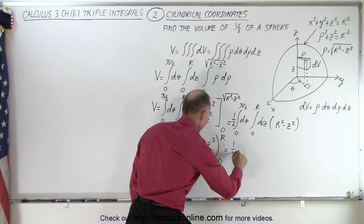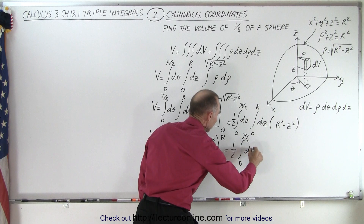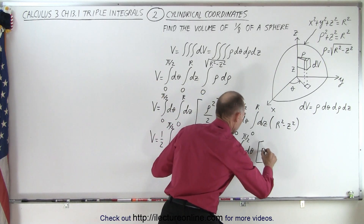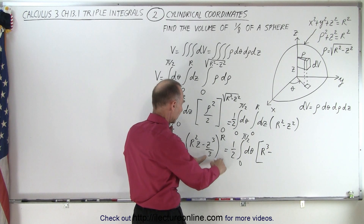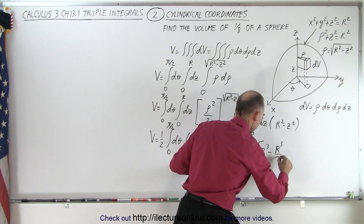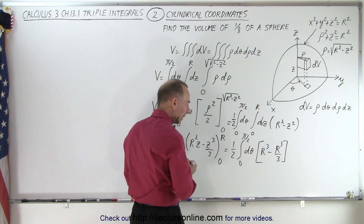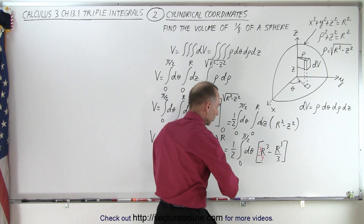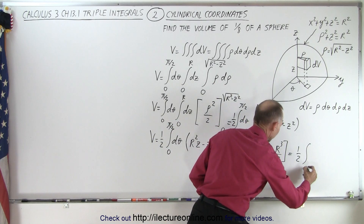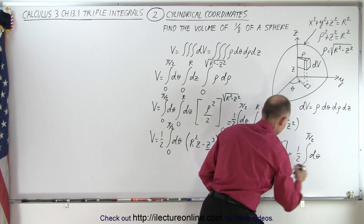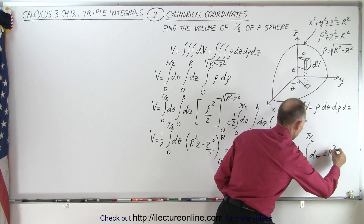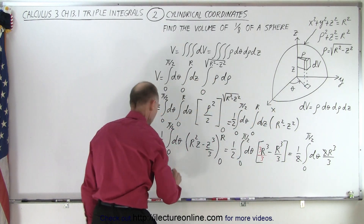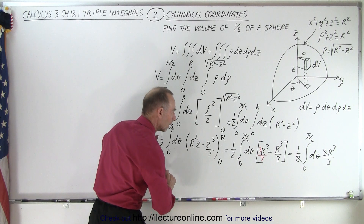So this becomes equal to one half times the integral from 0 to π/2 of dθ times the evaluated expression. Plugging in the upper limit, we get r³ − r³/3. The lower limit gives us nothing. Multiplying through with a common denominator of 3, we get 3r³ − r³ = 2r³, so this gives us one half times the integral from 0 to π/2 of dθ times 2r³/3. The 2's cancel out, and the volume simplifies to r³/3.